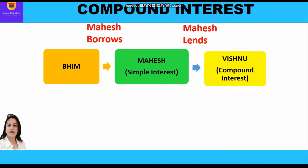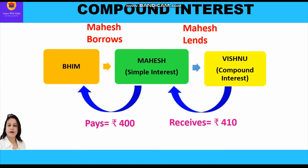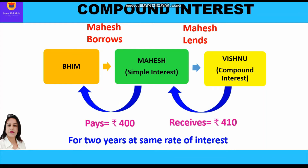When he is borrowing at simple interest, he will pay rupees 400 to Bheem, and when he is lending to Vishnu, he will receive rupees 410 as compound interest. The time period is two years and the rate of interest is the same in both cases. Now let's start with the solution.